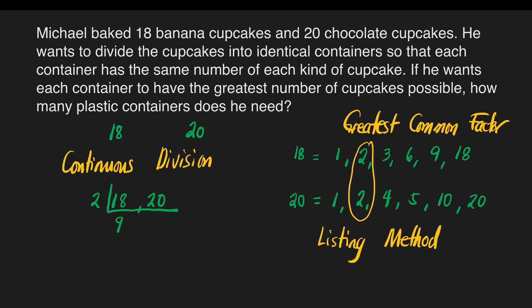Next, 20 divided by 2 is equal to 10. Do we still have a prime number that can divide 9 and 10? I think we don't. If there is no prime number that can divide the remaining dividends, then we consider this as our GCF already. But if there is still a number that can divide them, then we continue the process until none of the numbers have a common prime divisor. The GCF is the product of all the prime divisors. So we only have one divisor, which is 2. Our GCF for 18 and 20 is 2.